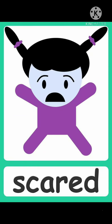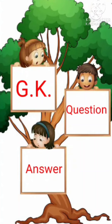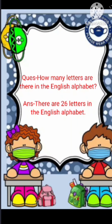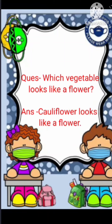So kids, revise these things at home. Now today we will also revise our GK questions. All the questions we have studied in GK, we will revise them today. The first question is: how many letters are there in the English alphabet? Answer: there are 26 letters in the English alphabet. The second question is: which vegetable looks like a flower? Answer: cauliflower looks like a flower.